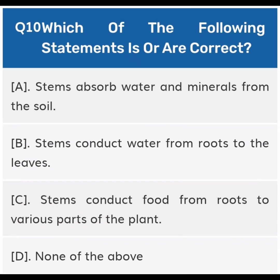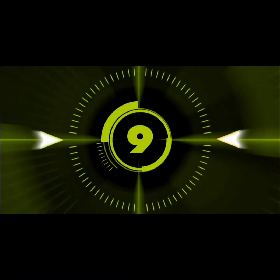This is the last question of this quiz. Question number ten: Which of the following statements is or are correct? Option A: Stems absorb water and minerals from the soil. Option B: Stems conduct water from roots to the leaves. Option C: Stems conduct food from roots to various parts of the plant. Option D: None of the above.